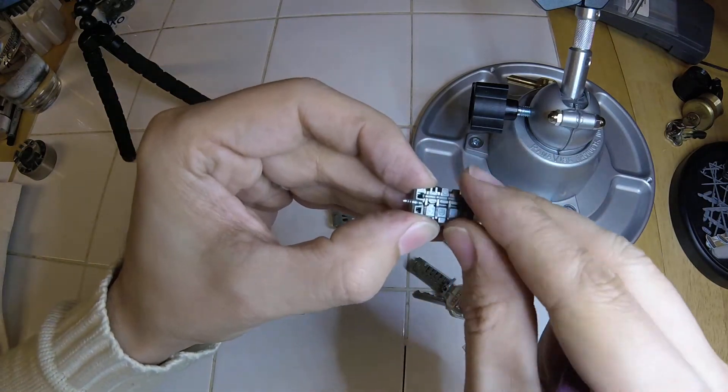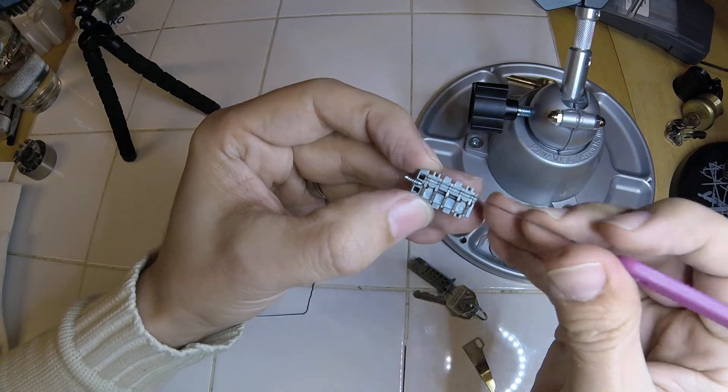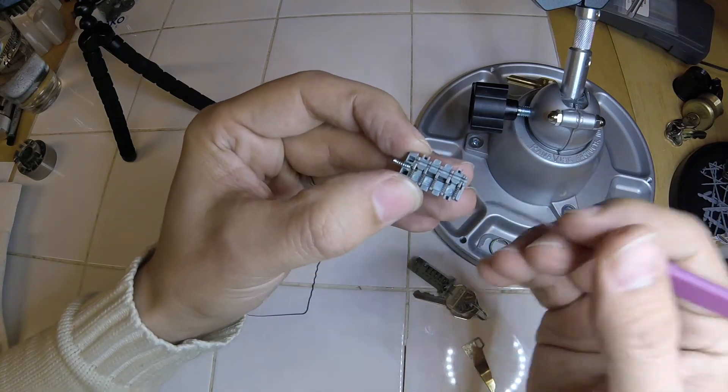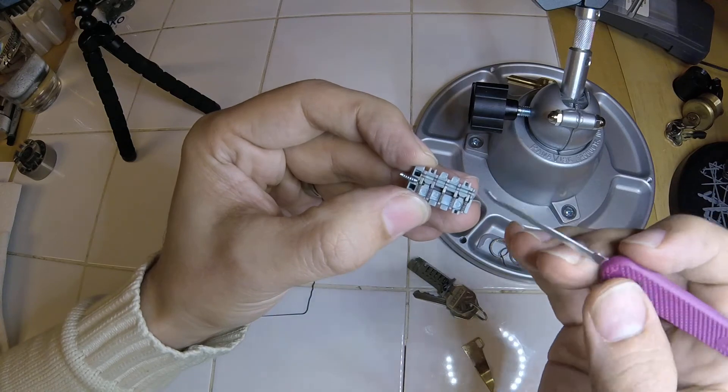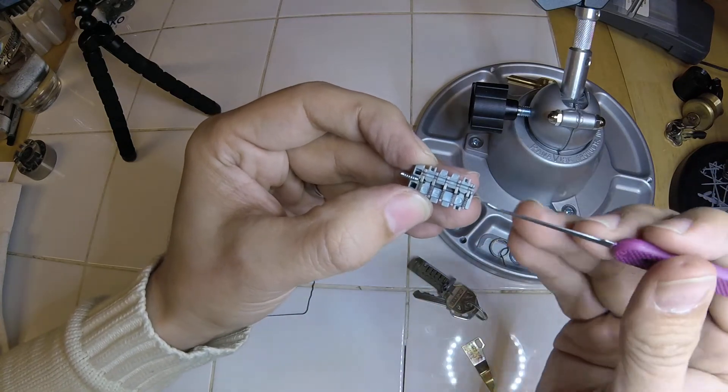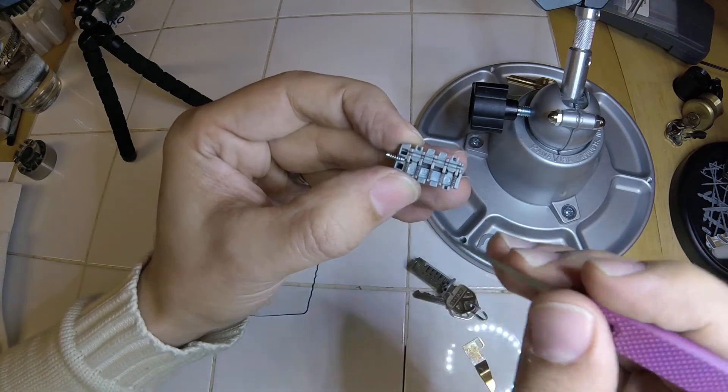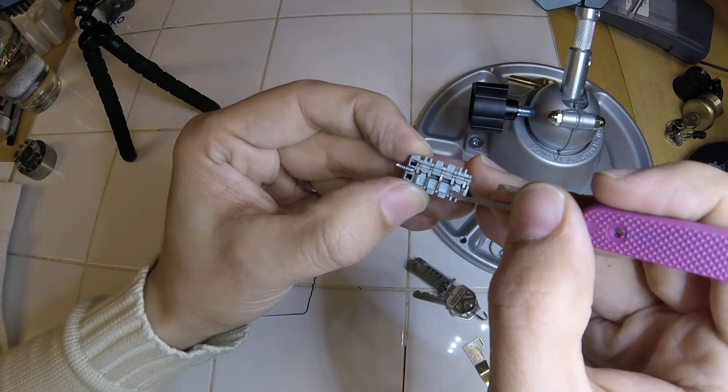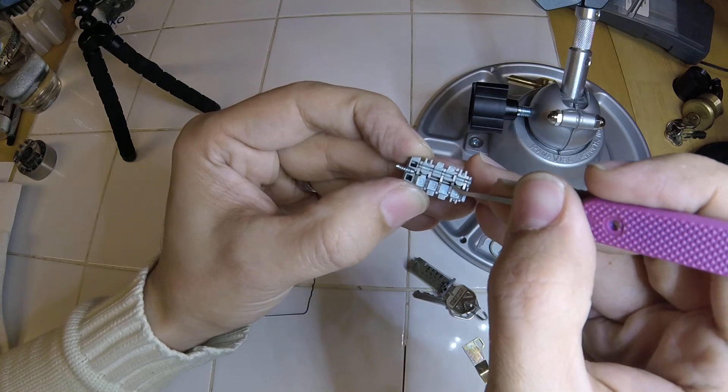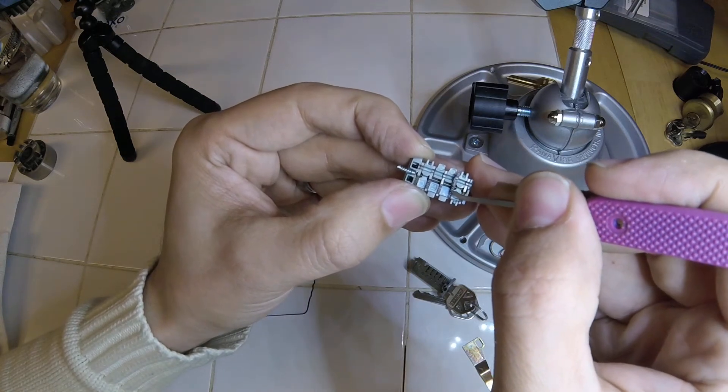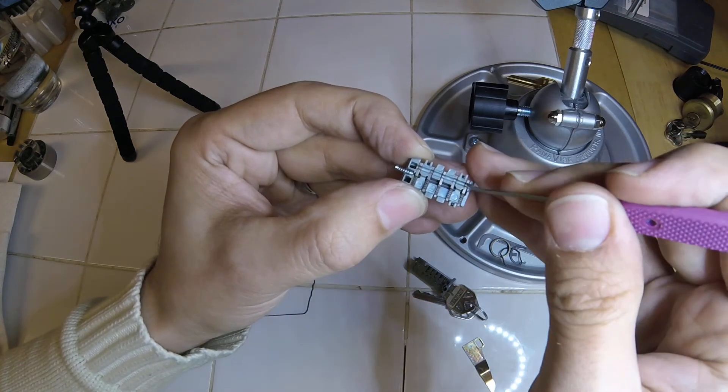When all those line up with that sidebar underneath, then the sidebar can move out of the way. And so this is the only way that's going to unlock. If you have the key lifting one of these pins to the wrong point, then obviously it's going to have one of these out of alignment and you're not going to be able to open the lock.